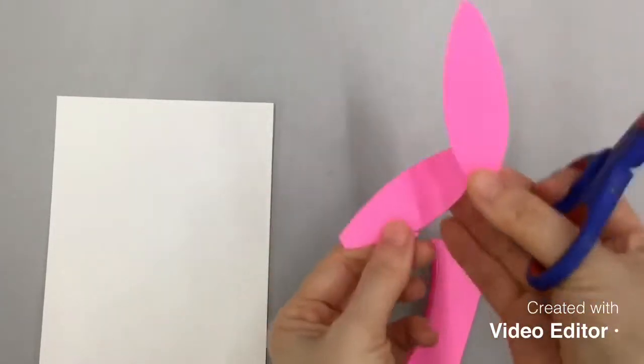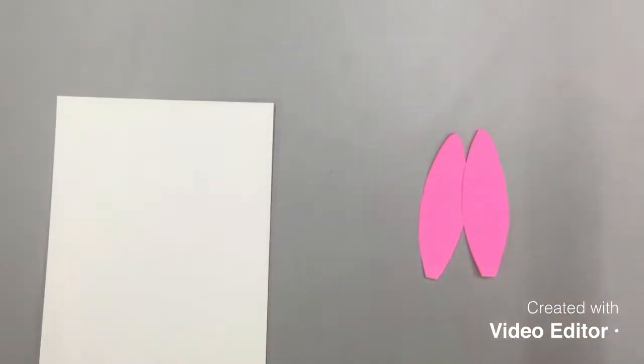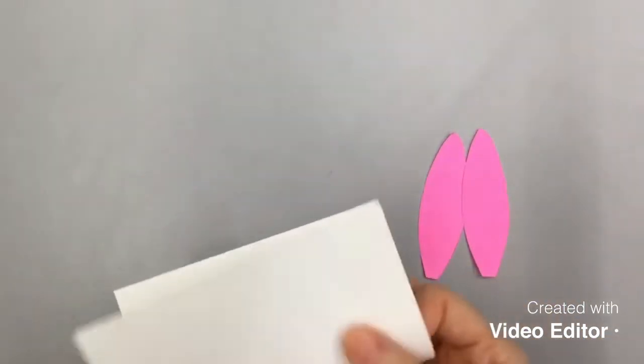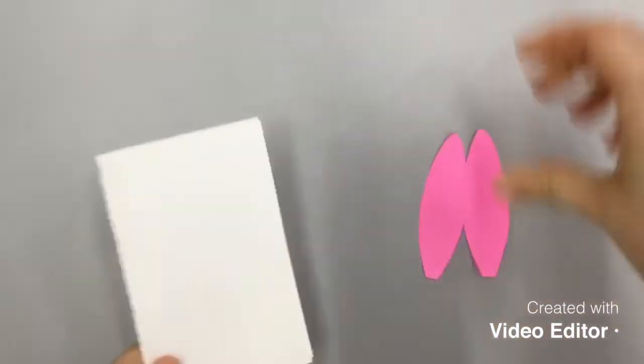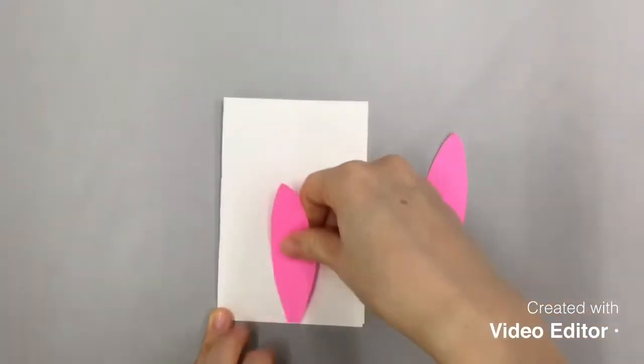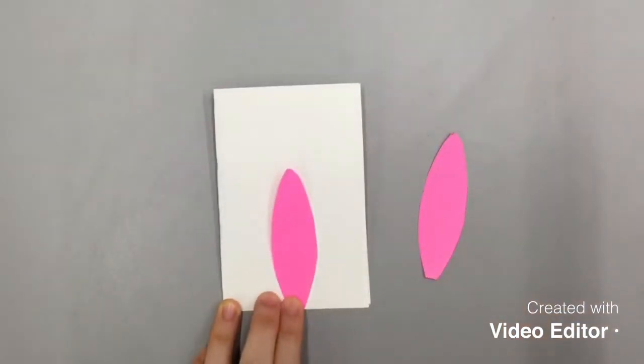We now have this pair of pink inner part of our bunny ears. And now we are going to make the outer part of the ears on white construction paper. So same as before, we fold it in half. And this time we need to make sure that our white is bigger than the pink.